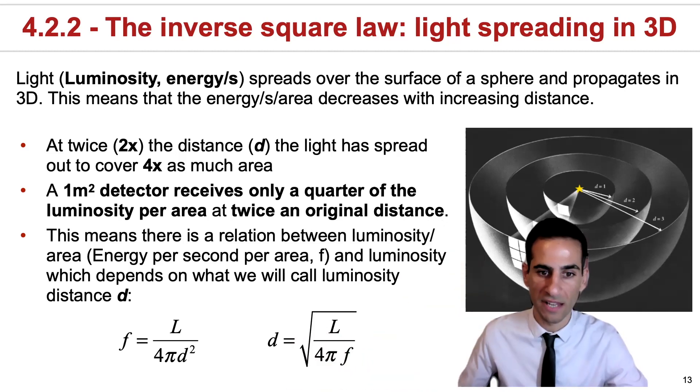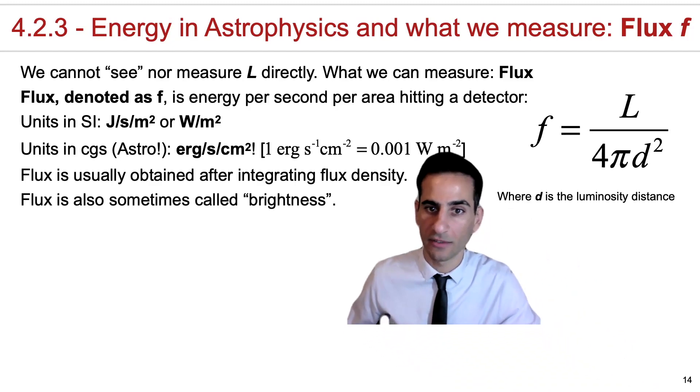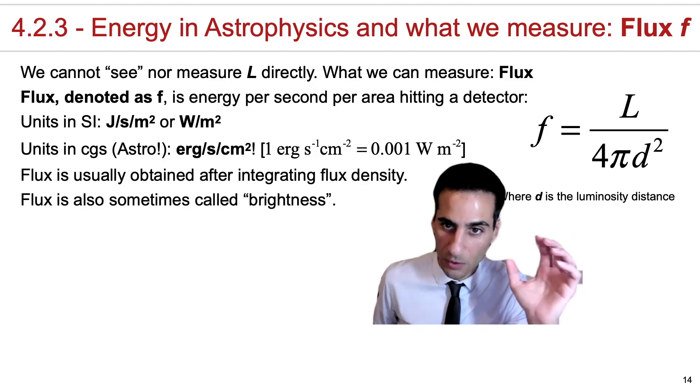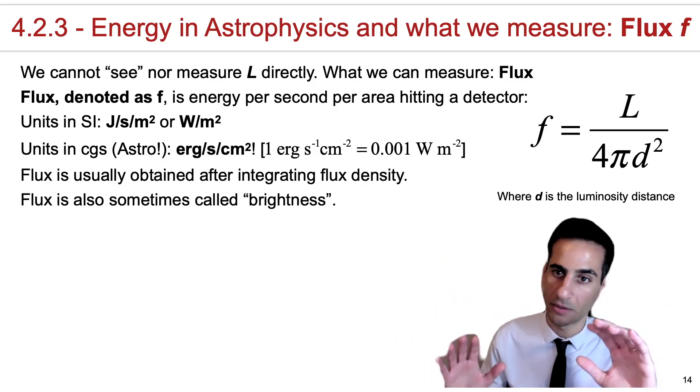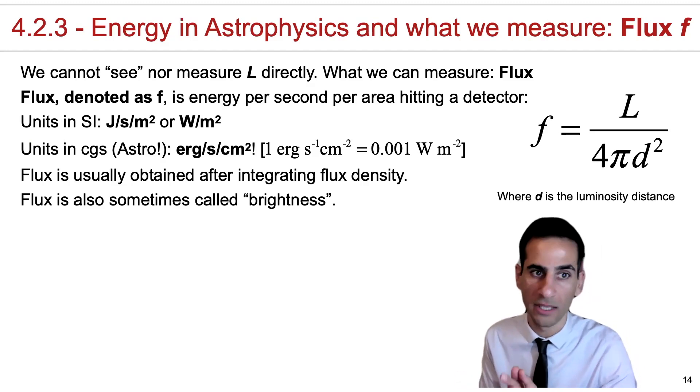Now what is this f? This f is what in astronomy and astrophysics we call flux. We can think of flux as being defined in terms of luminosity, as you can see here, where d is the luminosity distance. Once a source emits a certain luminosity, that energy is spread over three dimensions, and after distance d, what you measure is a flux which is L over four pi d squared. This is energy per second per area hitting, for example, a detector.